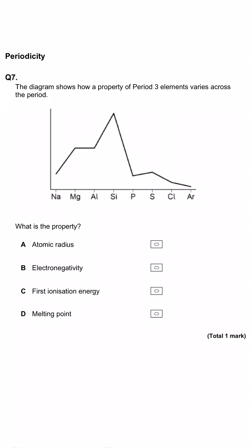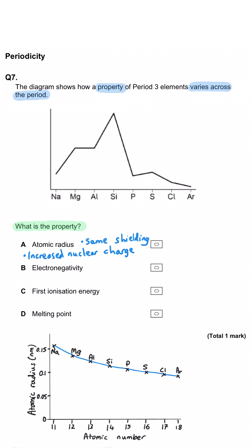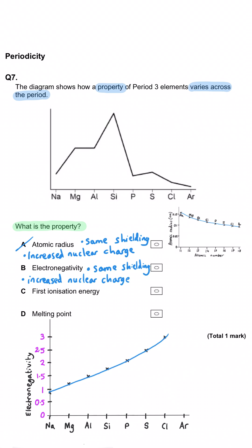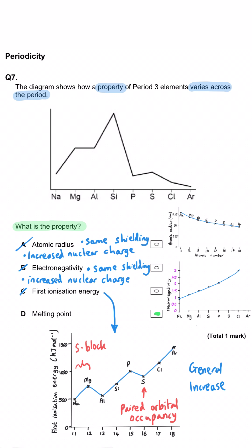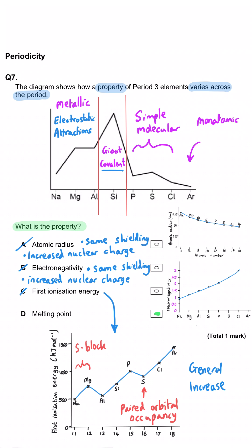The diagram shows how a property of period 3 elements varies across the period — what is this property? Atomic radius? No, atomic radius decreases across the period due to increased nuclear charge and the same shielding. Electronegativity? No, that's a general increase across the period. First ionization energy? No, that's a general increase but with dips between the second and third and between the fifth and sixth elements. So it must be melting point. That makes sense: three metals on the left with high melting points, giant covalent silicon with a huge melting point, then four elements on the right with only van der Waals forces. So D is correct.